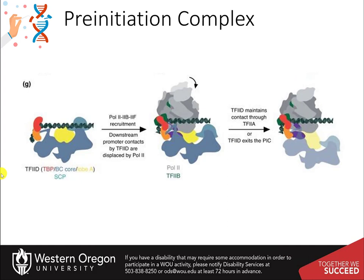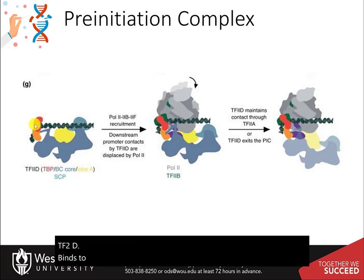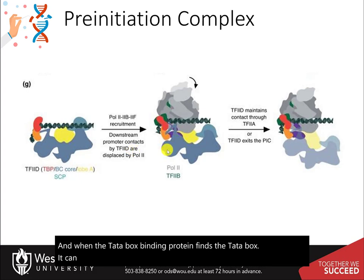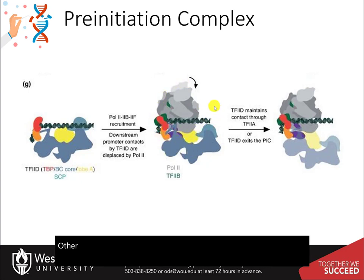This slide shows the assembly a little more clearly. TF2D binds to the DNA and when the TataBox binding protein finds the TataBox, it can then recruit TF2B and RNA polymerase II. Other transcription factors may be recruited at this time.